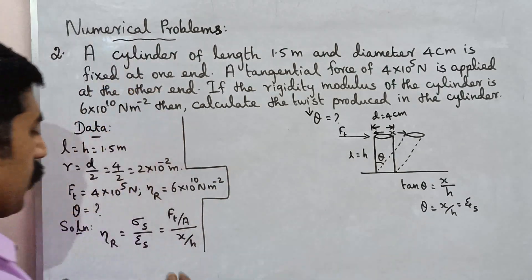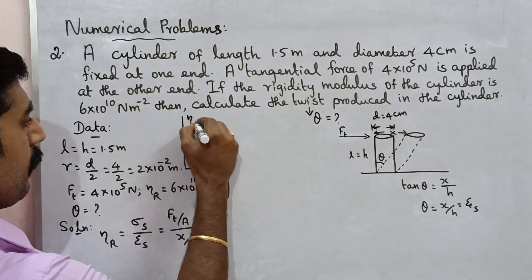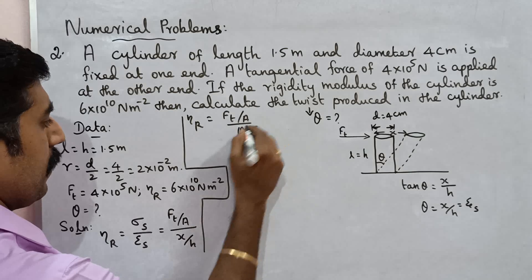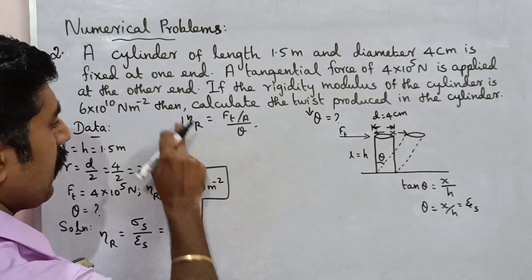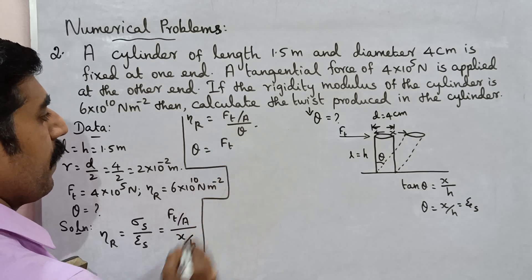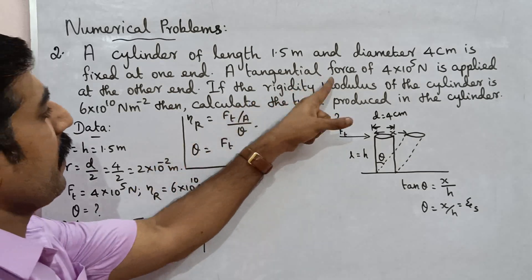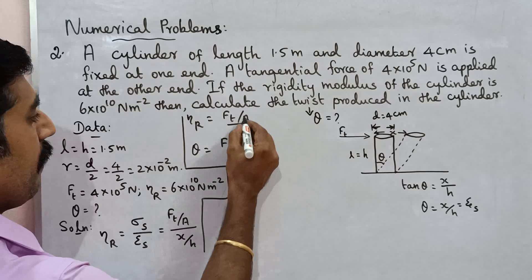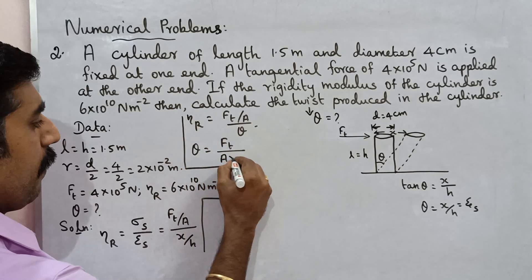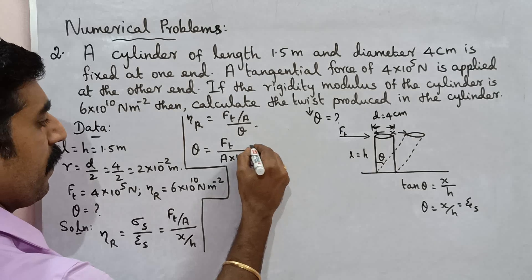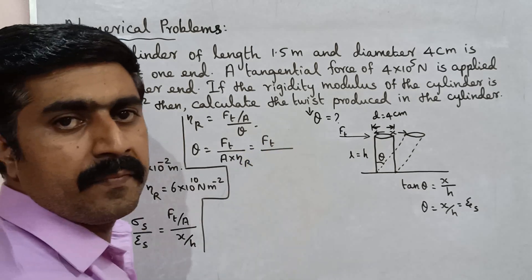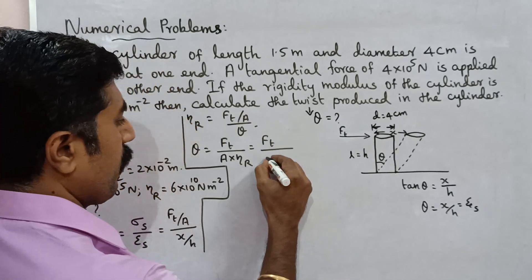So shearing strain sigma s is x by h, which is theta. Therefore, rigidity modulus eta r is equal to F_T divided by A, all divided by theta. Rearranging, theta is equal to F_T divided by A into eta r. Area formula is pi r squared.